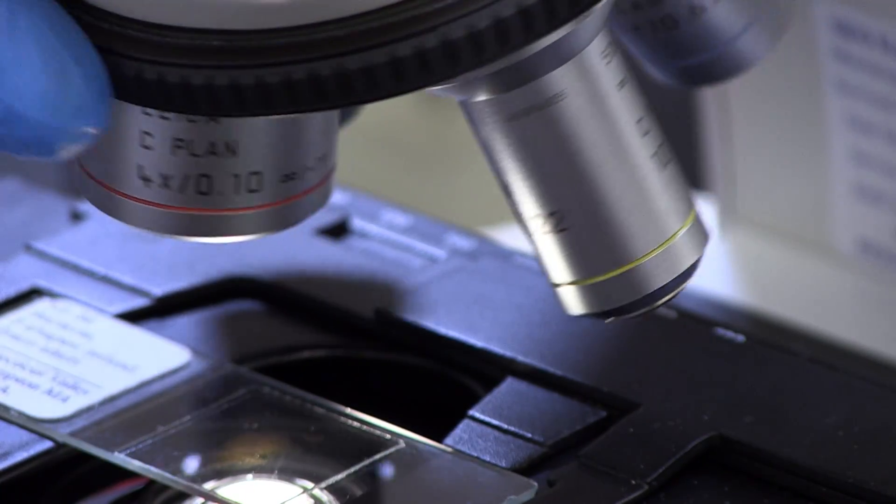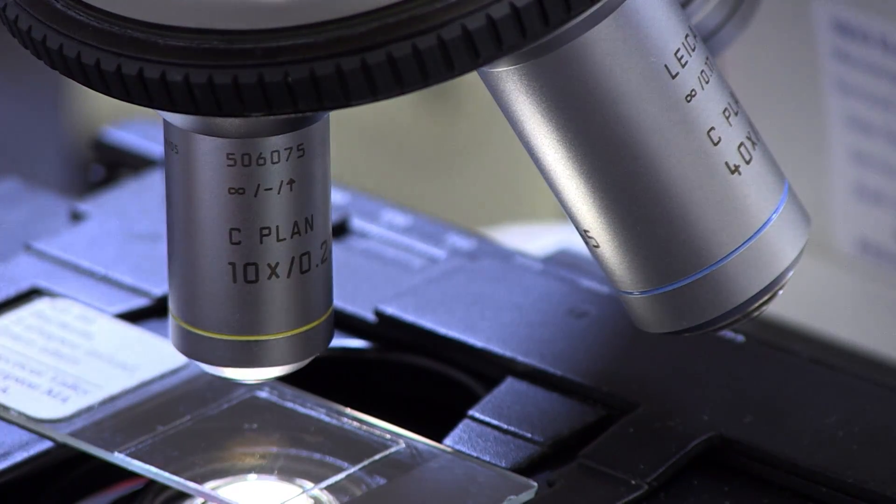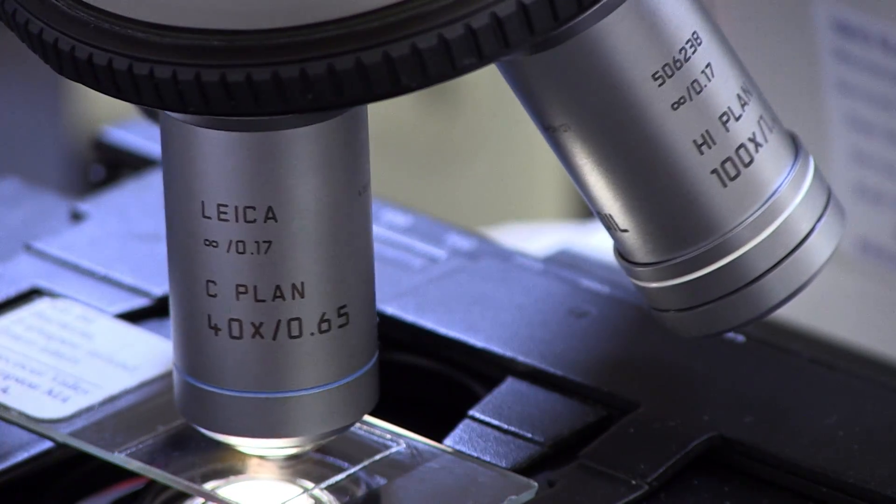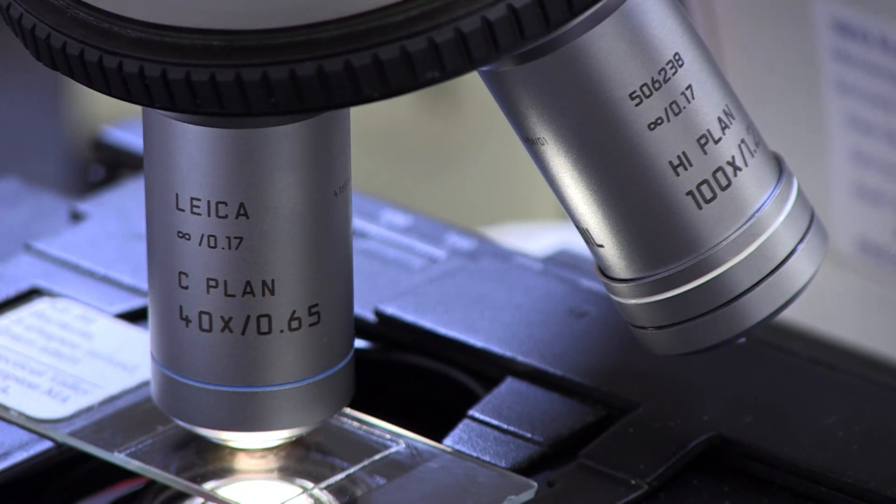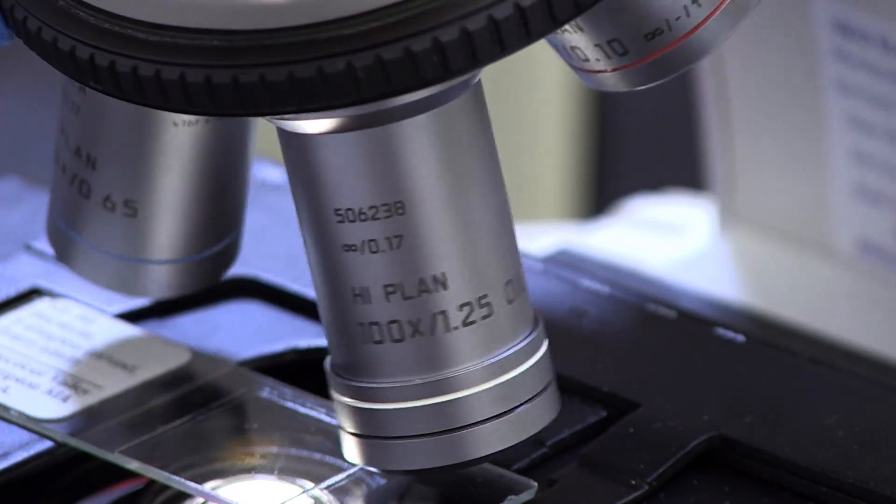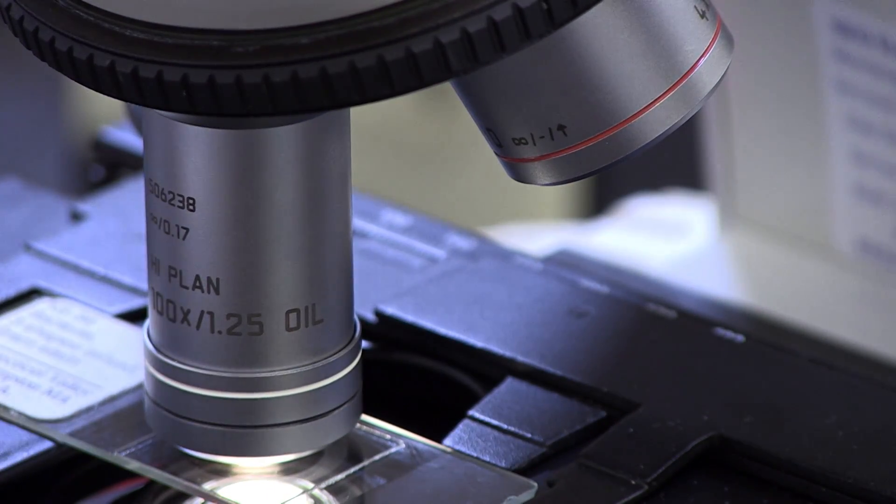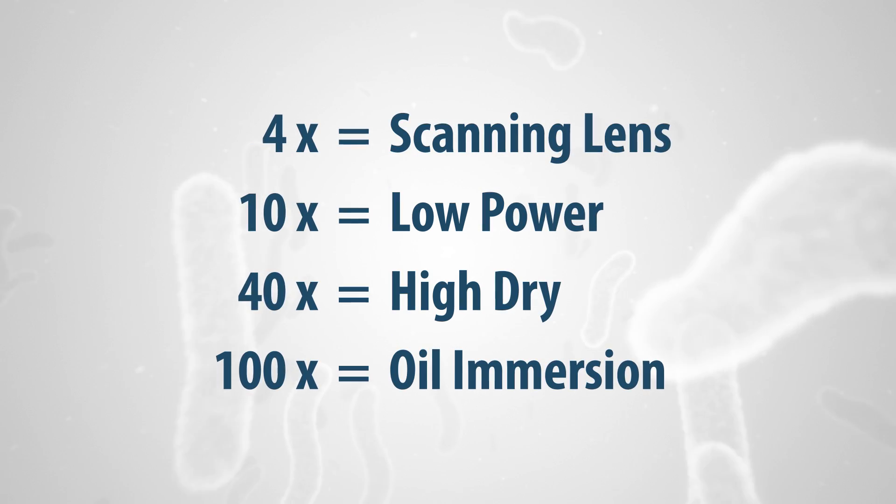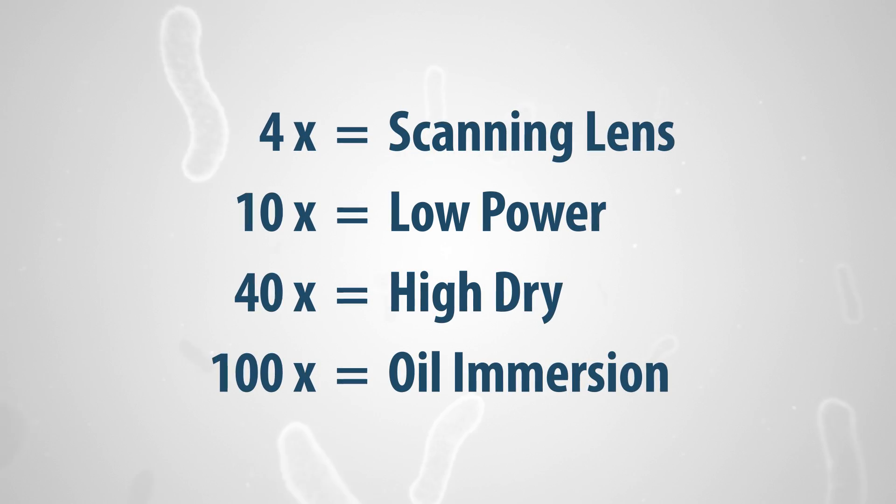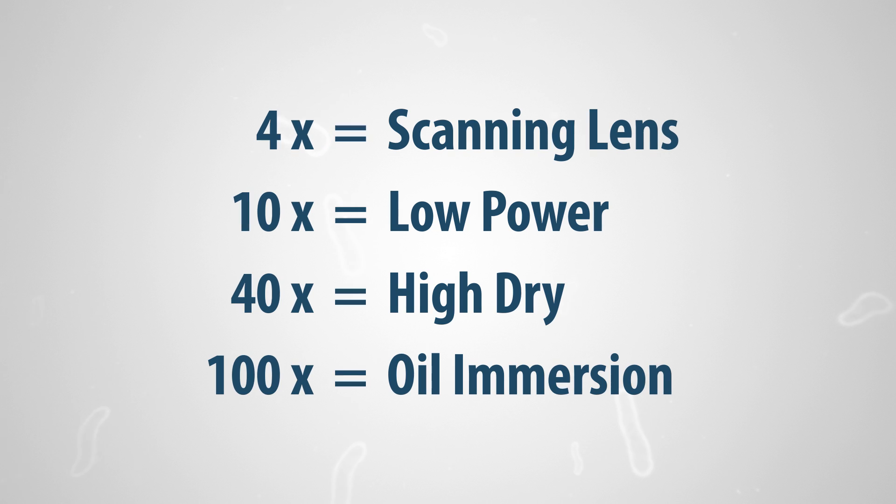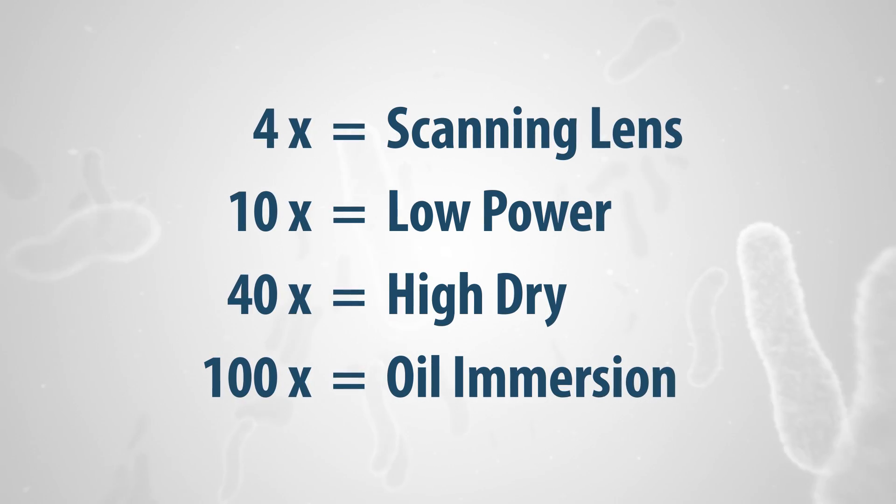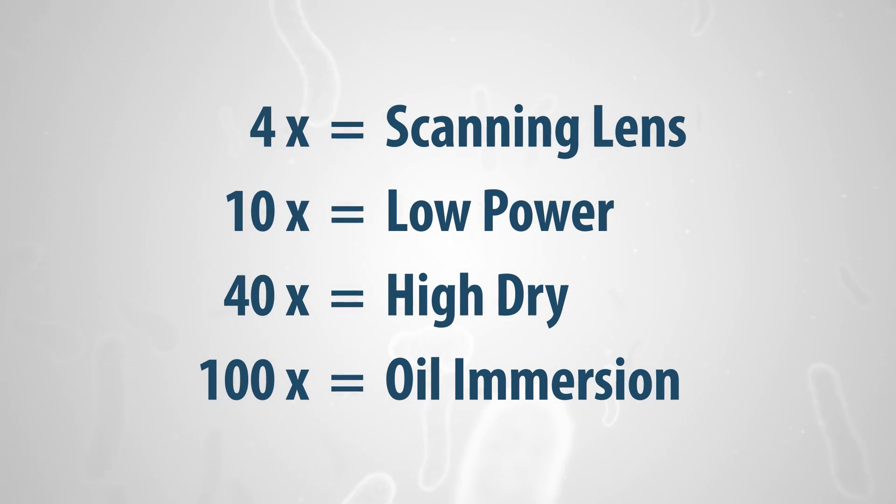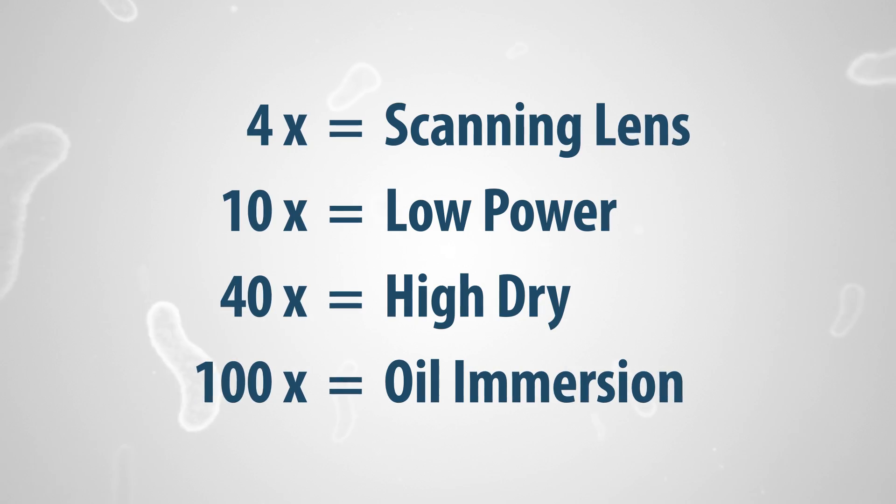Objective lenses, the second lens system of the light microscope, are found just above the stage. The three or four objectives are attached to a revolving nose piece that allows the lenses to be rotated into position. The four objectives have magnifications of 4x, 10x, 40x, and 100x, designated as scanning lens, low power, high power, and oil immersion, respectively.